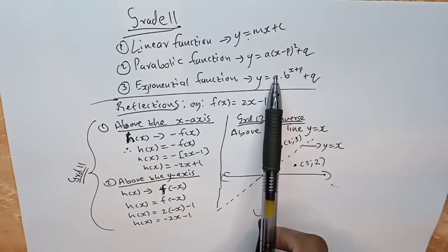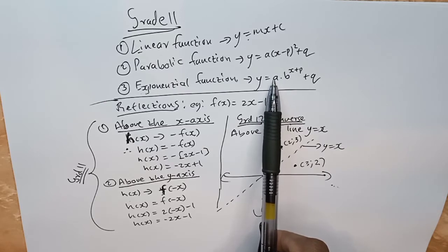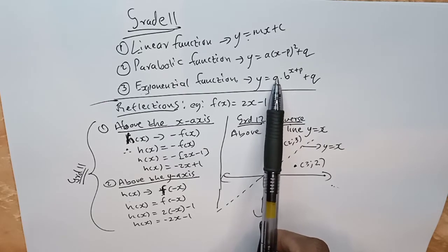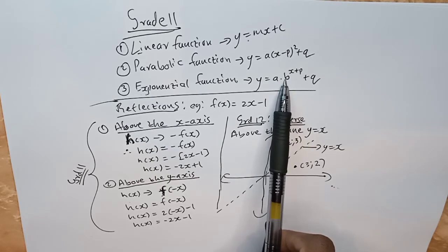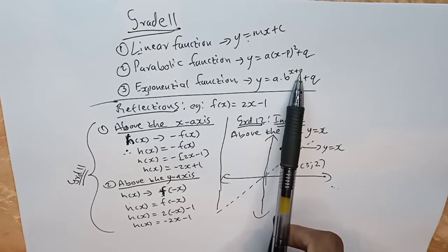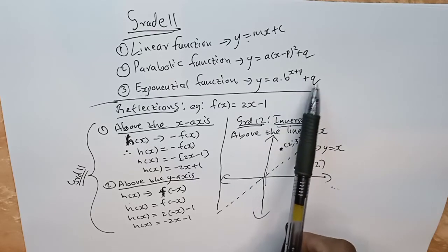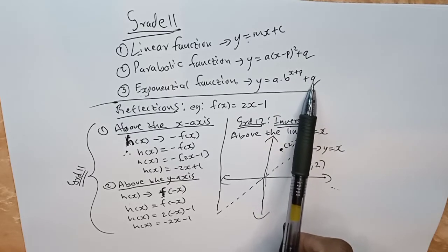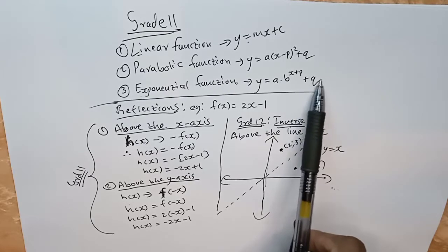For the exponential function, a tells you the shape — whether the function is going to be above or below the asymptote. b tells you whether the function is increasing or decreasing. p is a horizontal shift — whether it's going left or right. And q is the shift of your asymptote, which also shifts the whole function.